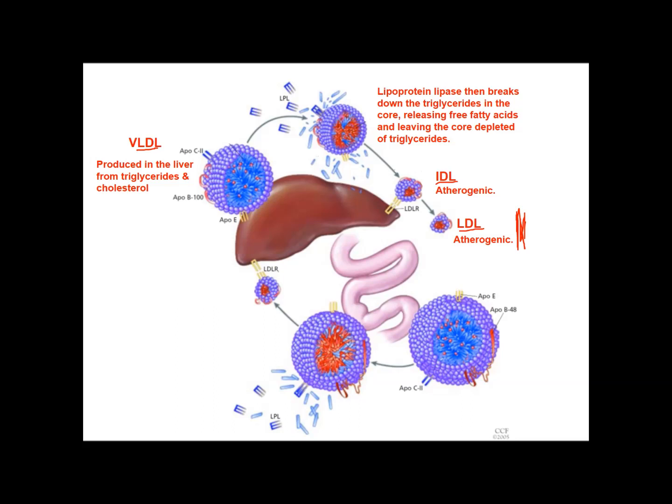LDL by far has the longest half-life. The reason is that although LDL possesses the proteins that can dock onto receptors in liver cells — which can take these lipoproteins out of circulation — the affinity of LDL for these liver receptors is much lower than the affinity between IDL and VLDL and those receptors. Therefore, VLDL and IDL are much more likely to be taken out of circulation because they more readily bind to the receptors on liver cells.